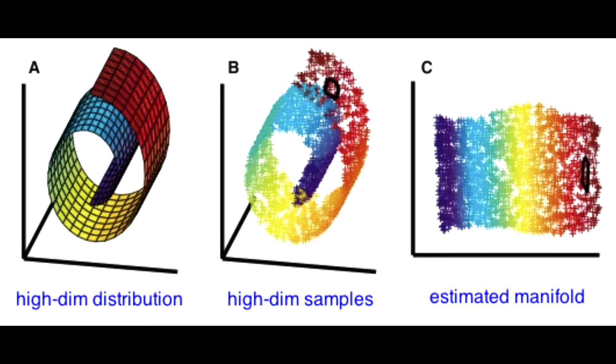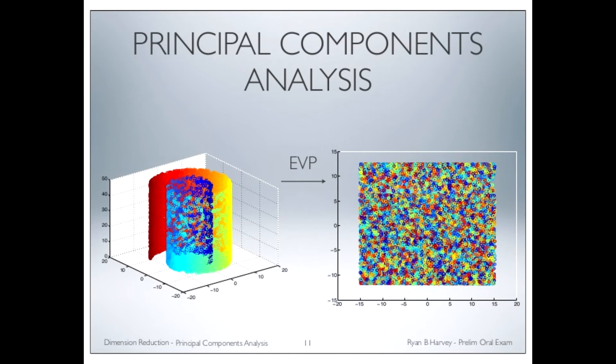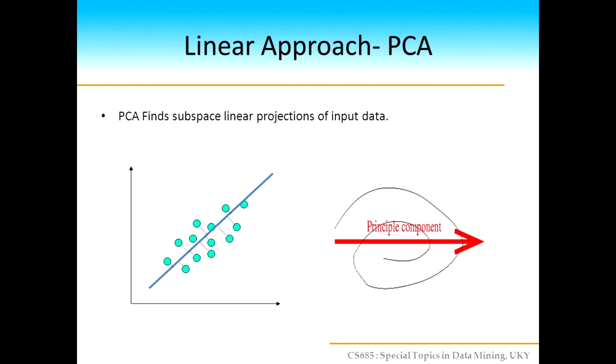Perhaps the most popular classic algorithm for dimensionality reduction is Principal Component Analysis (PCA). Given the dataset, PCA finds the direction along which the data has maximum variance in addition to the relative importance of these directions. But PCA is most useful in the case when data lies on or close to a linear subspace of the data.